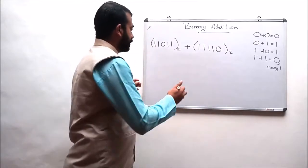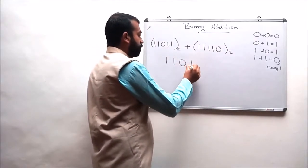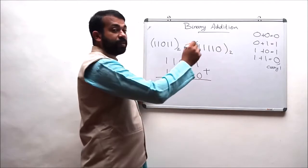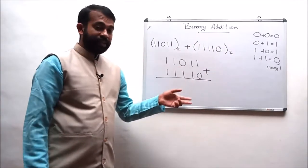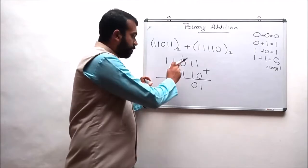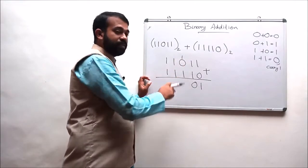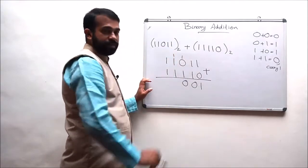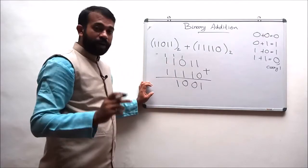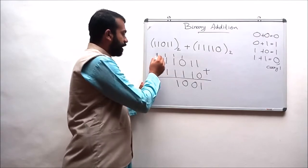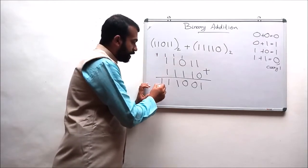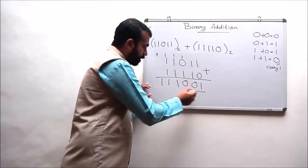Let us consider one more example: 1 1 0 1 1 is adding with 1 1 1 1 0. We are starting from the LSB position. 1 plus 0 is 1. 1 plus 1 is 0 with a carry of 1. 1 plus 0 is 1, and that 1 adding with 1 results in 0 with a carry of 1. 1 plus 1 is again 0 with a carry, and 0 is adding with 1 results in 1. 1 plus 1 results in 0 with a carry, and that 0 adding with the 1 results in 1, and this 1 is put to the MSB position. The final answer will be 1 1 1 0 0 1.